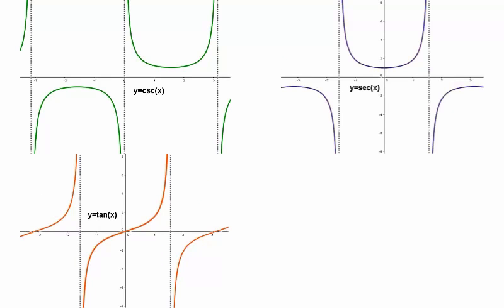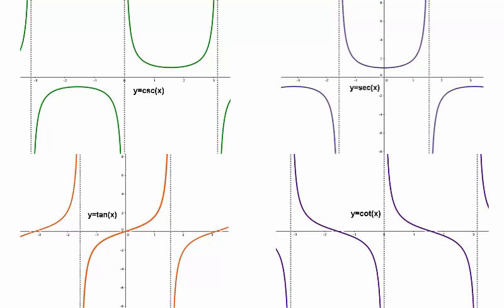Tangent, secant, cosecant, and cotangent have no horizontal asymptote as they're periodic, but they do have an infinite number of vertical asymptotes.